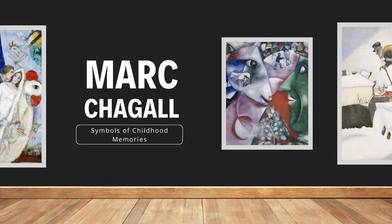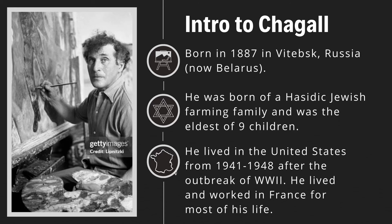First, let's take a look at where he comes from, his background, and all the things that made him who he was. He was born in 1887 in Vitebsk, Russia, which is now Belarus. There were a lot of border changes during that time of his life, so think about how that may have shaped his perspective and how he shows that in his art.